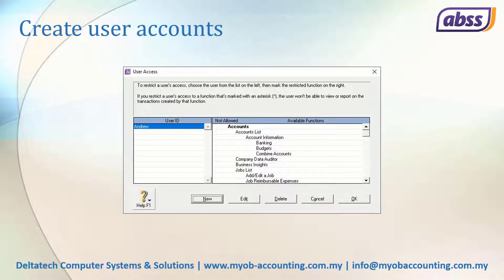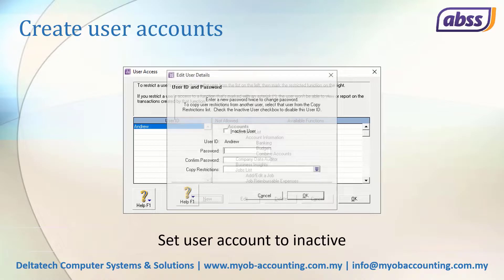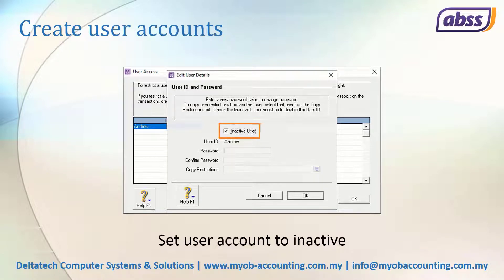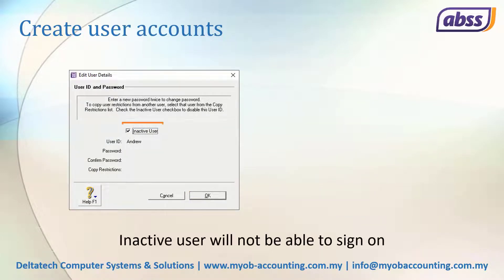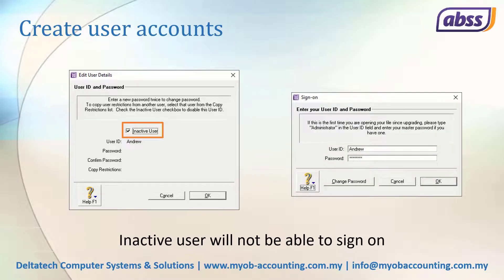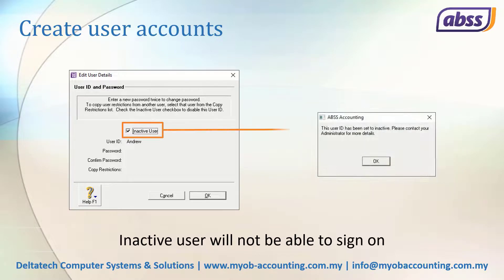In that case, you can set the user ID to inactive to prevent the user from accessing the file. To do that, select the user, then click Edit. In the Edit User Access window, select the Inactive option, then click OK. When a user account has been set to inactive, the user will not be able to sign on.